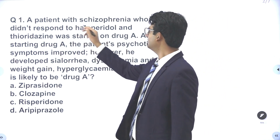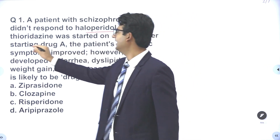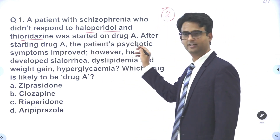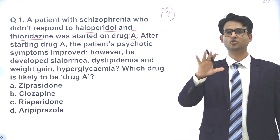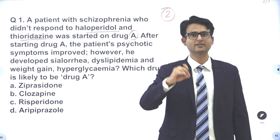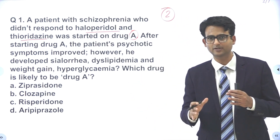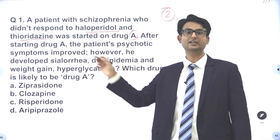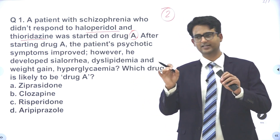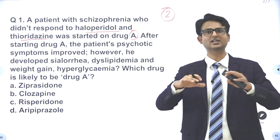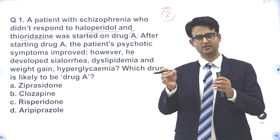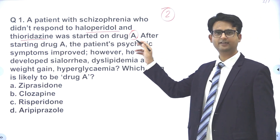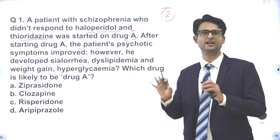I like this question. A patient with schizophrenia who did not respond to haloperidol and thioridazine — so the patient has not responded to 2 different antipsychotics and was started on drug A. When a patient does not respond to 2 different antipsychotics, we call that treatment resistant schizophrenia (TRS). The most acceptable definition says that one of the 2 antipsychotics should be atypical, which is not the case here — both haloperidol and thioridazine are typical antipsychotics. Nonetheless, we will call it TRS because there are multiple definitions, and having one atypical antipsychotic is not a mandatory criterion. So our diagnosis is TRS.